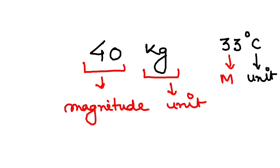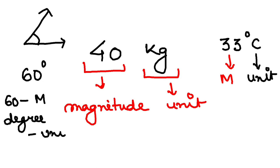Let me give another example. Let's say there's an angle here, and after you have measured this angle you've got the result that's 60 degree. So the 60 is your magnitude and this degree is your unit. This is the unit of angle.